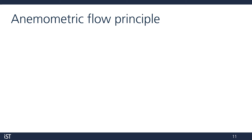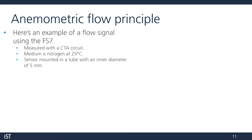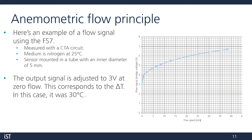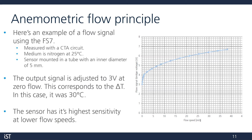Let's take an example of a flow signal using an FS7 mounted in a 5 mm diameter tube. The medium is nitrogen at 25°C, and our temperature difference is set to 30°C. We perform the measurement using a CTA circuit. The output signal is adjusted to 3 volts at zero flow, corresponding to our temperature difference of 30°C. As you can see by the slope, the sensor has its highest sensitivity at lower flow speeds.